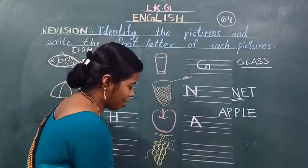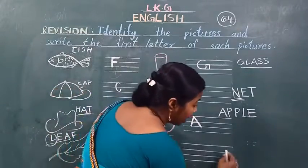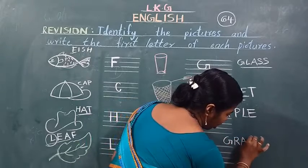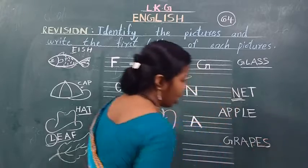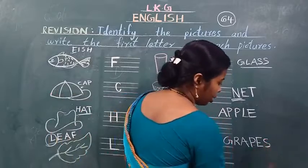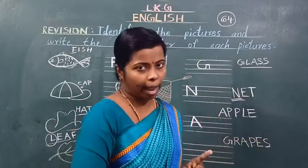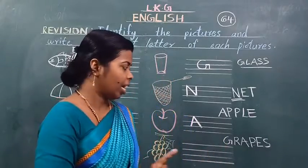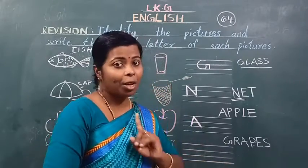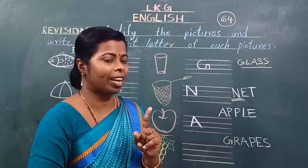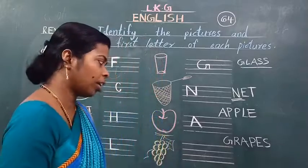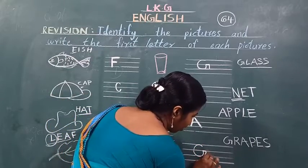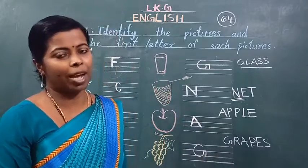And see the next picture. Ye kya hai? Grapes. This is grapes. Grapes ka spelling malum hai kya aapko? Bolo — G-R-A-P-E-S, grapes. Spell the word grapes — G-R-A-P-E-S grapes. Idhar haam koon sa letter likhenge? Pahla ashar koon sa hai? G-R-A-P-E-S — pahla ashar G hai. Samajh me aya hai kya sabko?